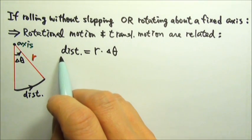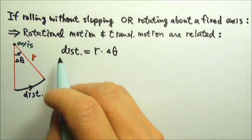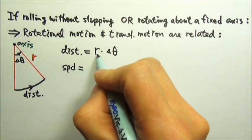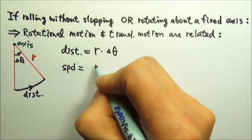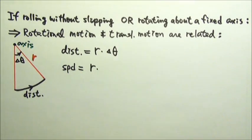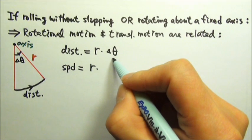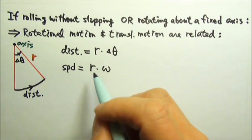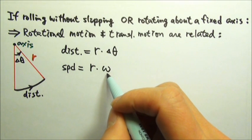Now if I divide by time on both sides, distance traveled divided by time gives me speed. And r is a constant. When we divide delta theta by time, we get omega. So speed is r times the angular velocity.